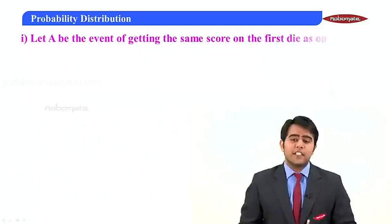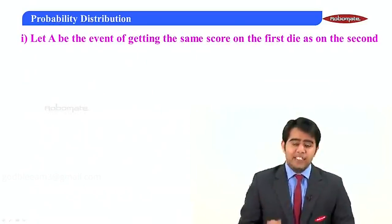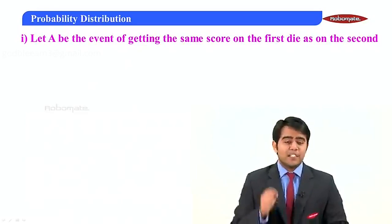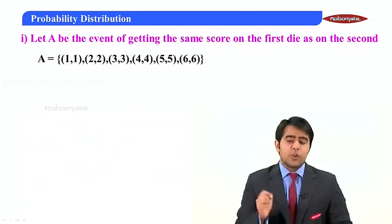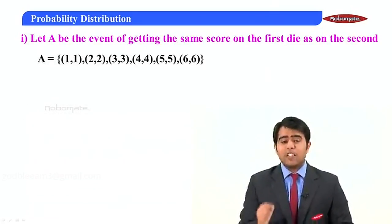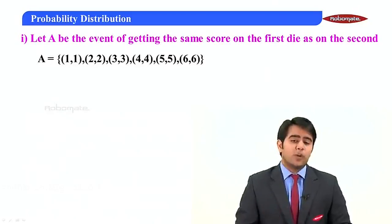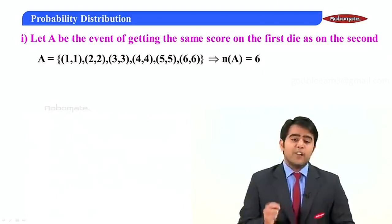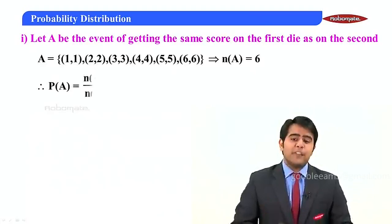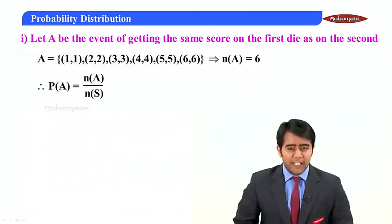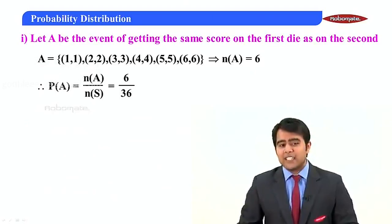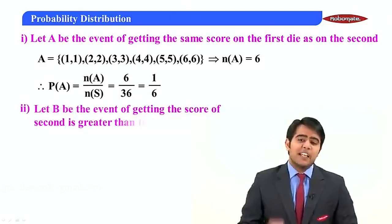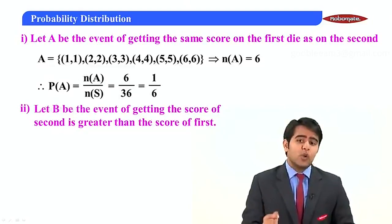For the first part, let event A be getting the same score on both dice. The sample space for A is: (1,1), (2,2), (3,3), (4,4), (5,5), (6,6). So n(A) = 6. Therefore, P(A) = n(A) / n(S) = 6/36 = 1/6.